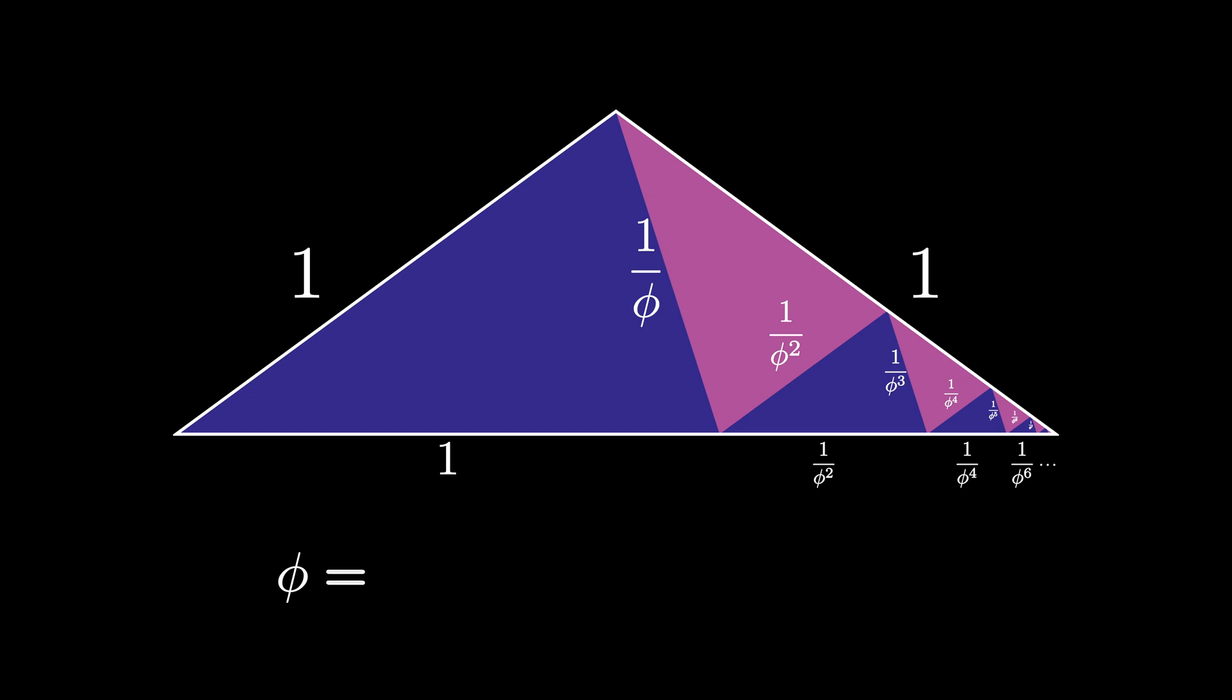On the other hand, it's given by the sum of the lengths of the purple golden triangle sitting inside. But each of those purple triangles has a length given by 1 over an even power of the golden ratio.